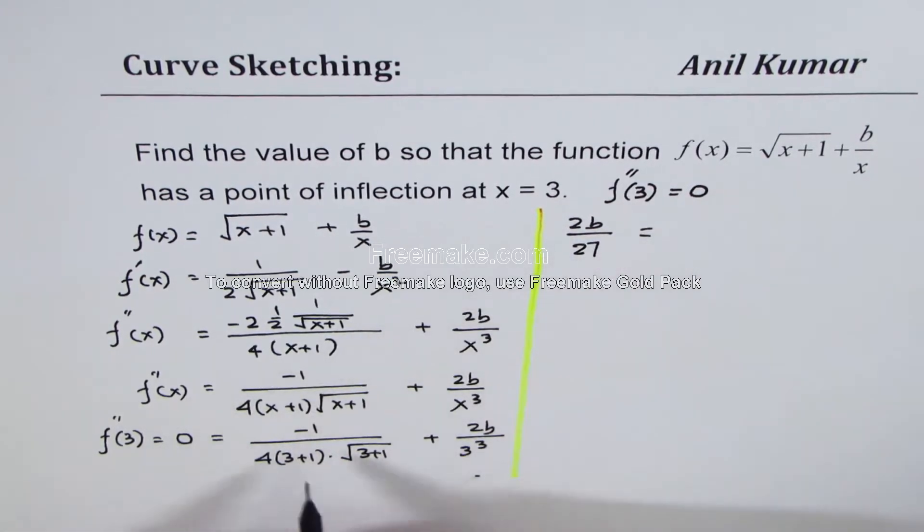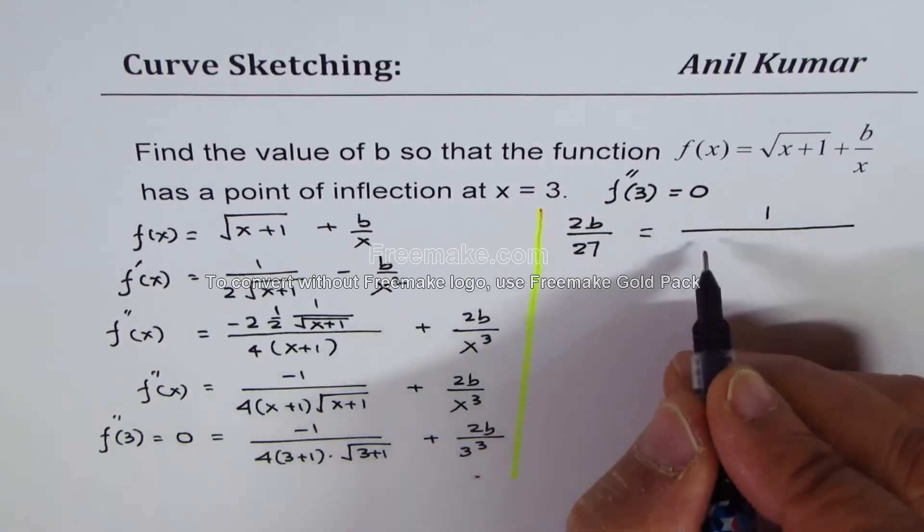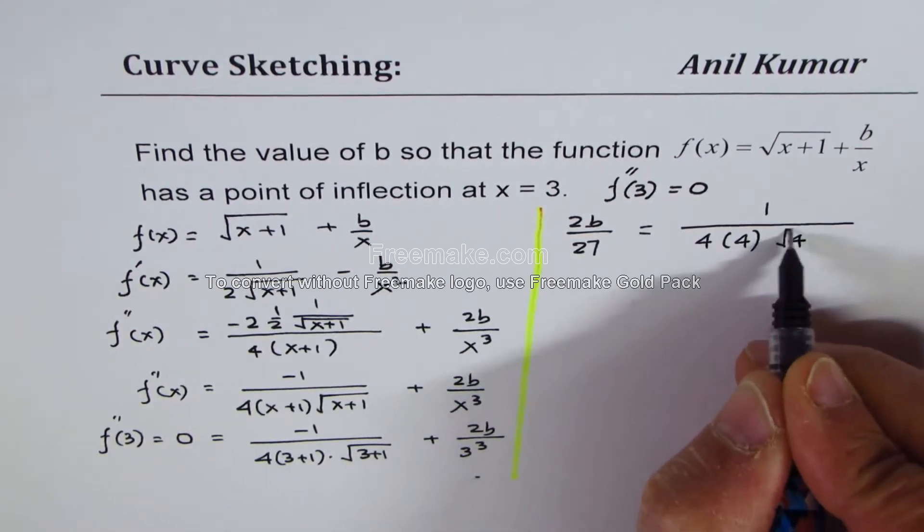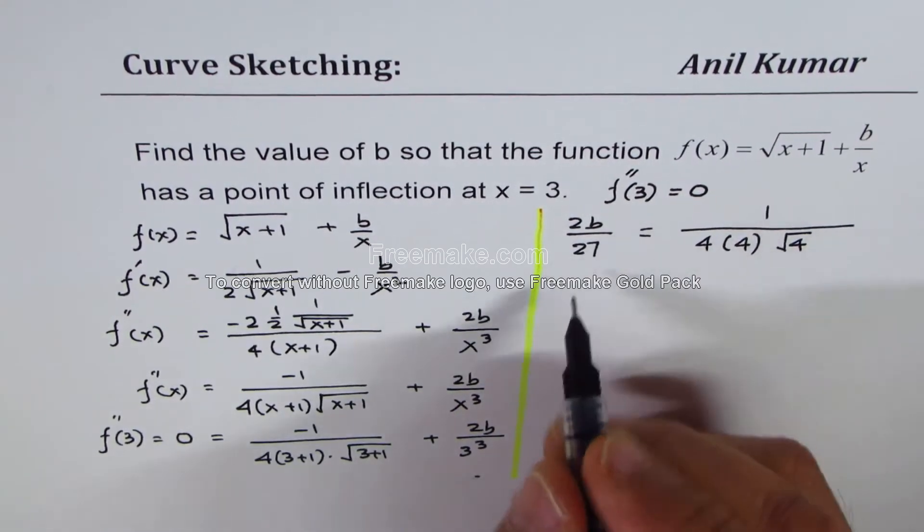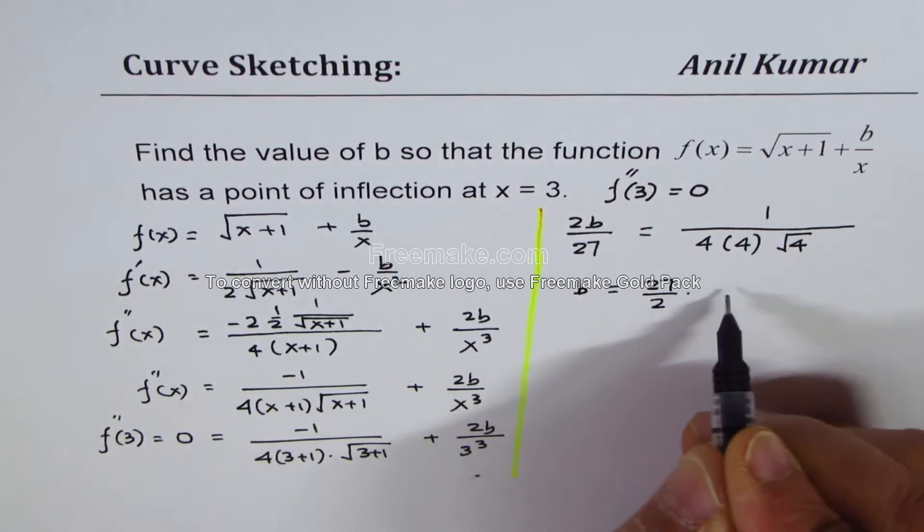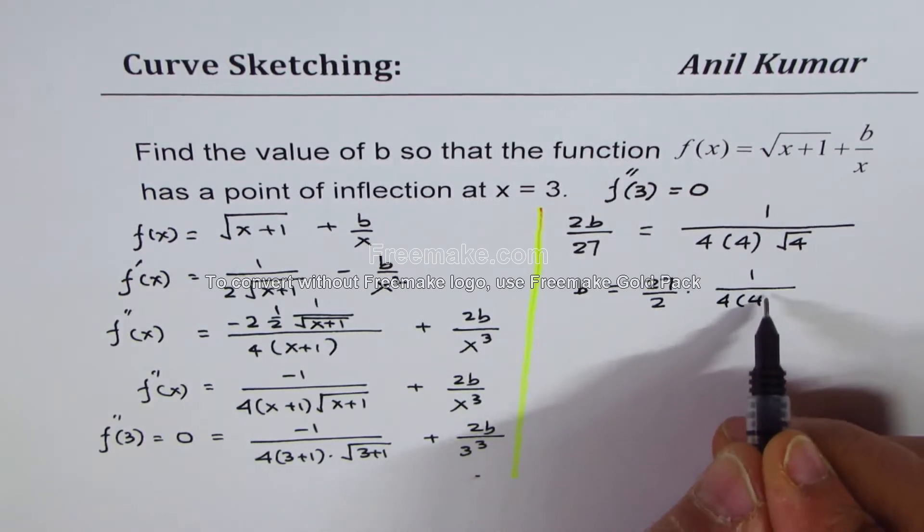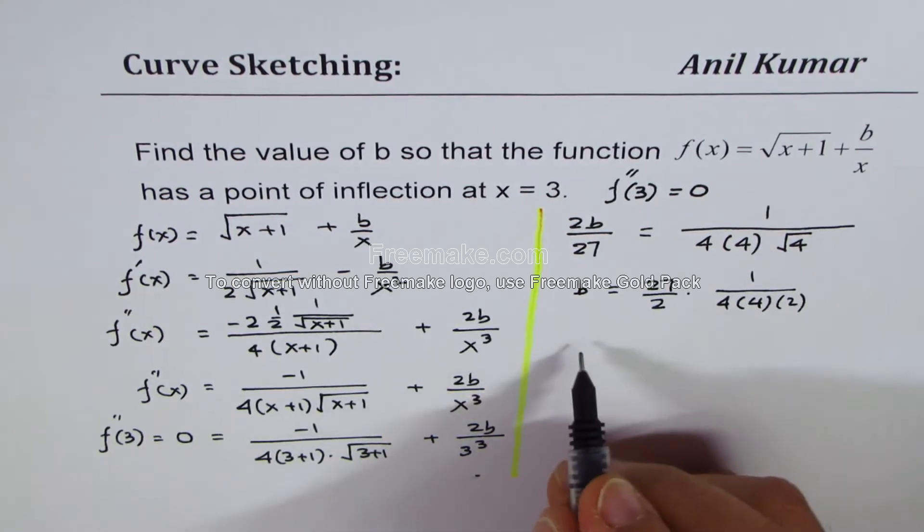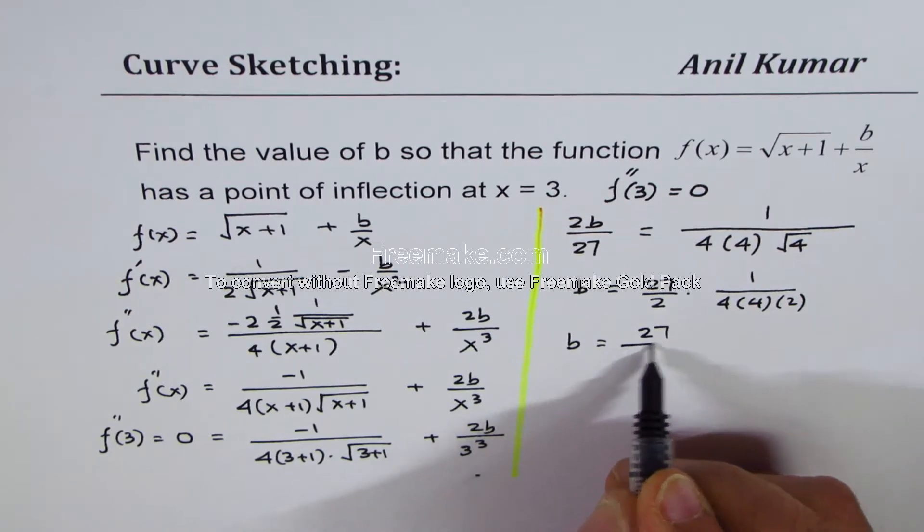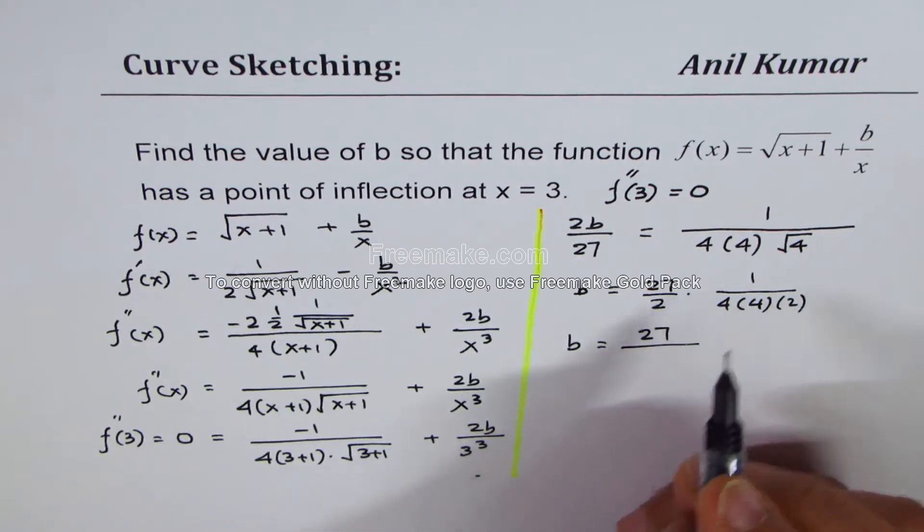4 times 4—3 plus 1 is 4, square root of 4—so we can say b equals 27 over 2 times 1 over 4 times 4 times 2. So b equals 27 over 4 times 4 is 16 times 2, which is 64.